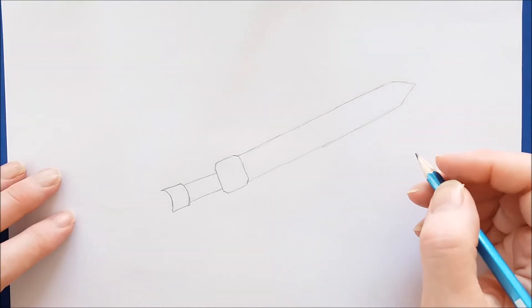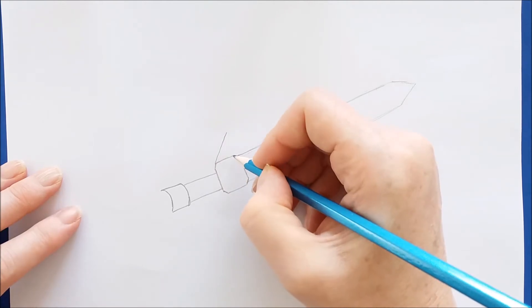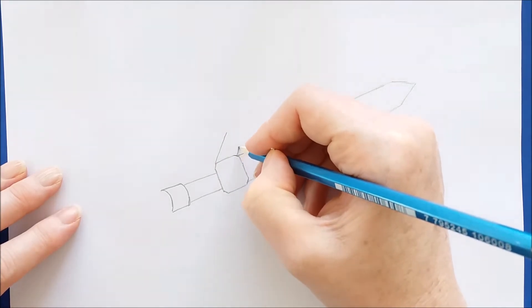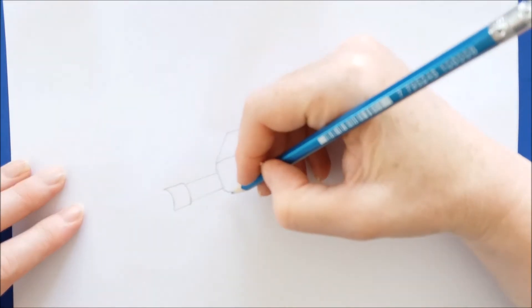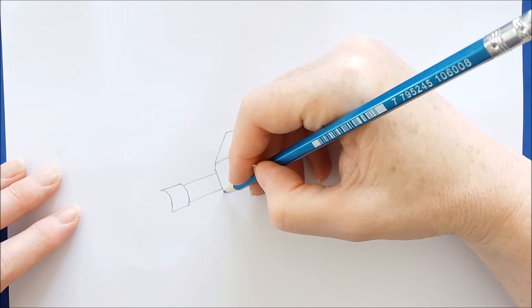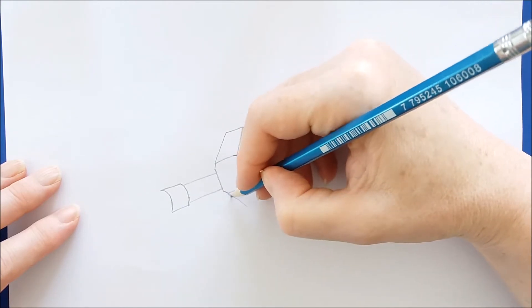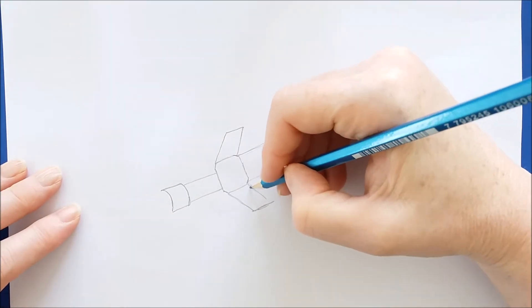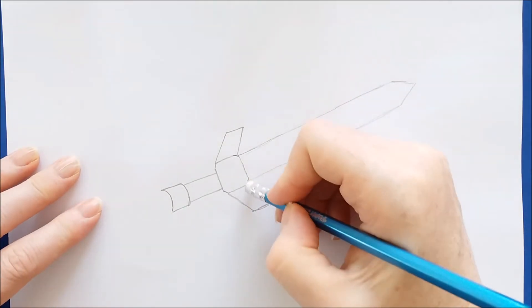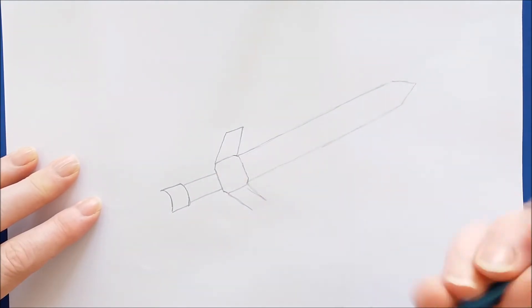The next thing I want to do is to finish off the guard on this sword. So I'm drawing two angling lines up and connecting them with a straight line, and then I'm going to do the same thing down here. I'm going to draw two angling lines down and connect it with a straight line. Once I have this finished, I'll go ahead and add in the center detail of this guard. This sword has kind of a medallion in the center of the guard.